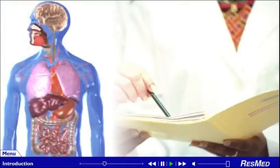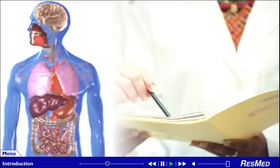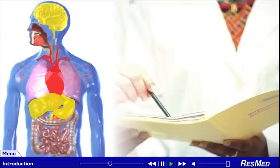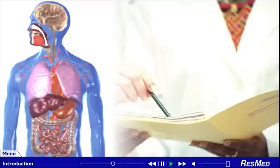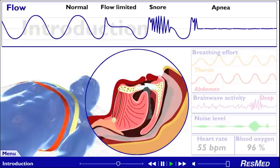Breathing brings air into the lungs so that oxygen can be transported throughout the body via the bloodstream. Oxygen is vital for organ function and general health and well-being. If you have SDB, airflow to your lungs periodically decreases while you sleep. Changes in the upper airway are the most common cause of reduced airflow.